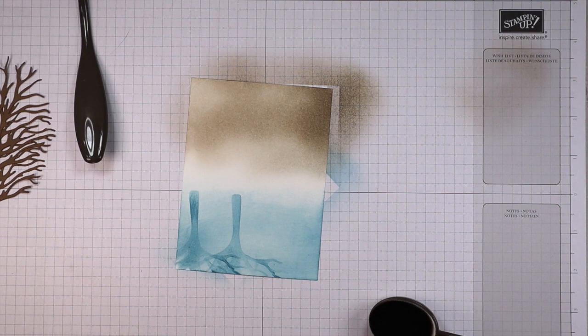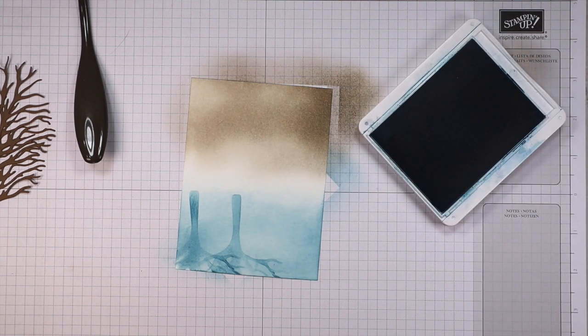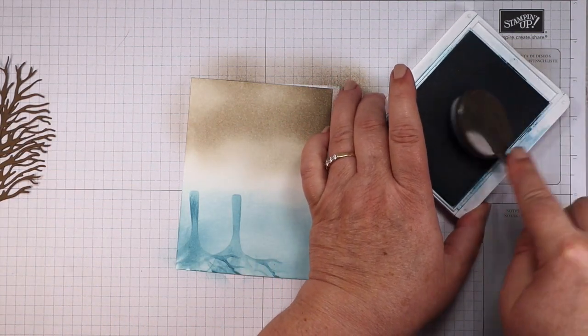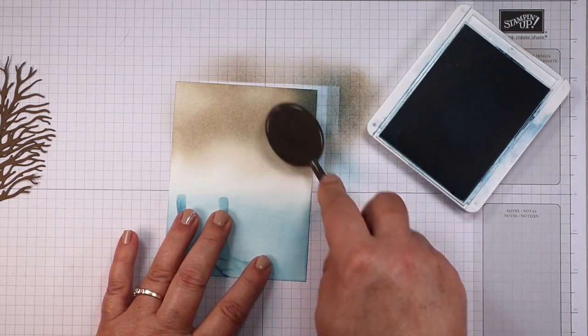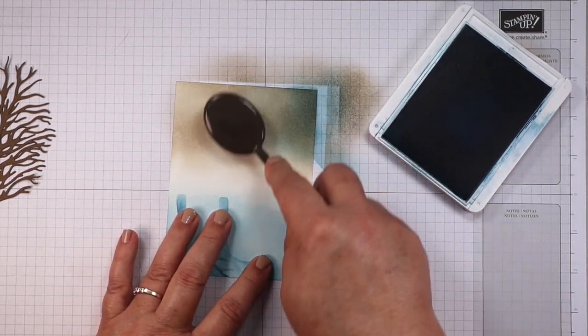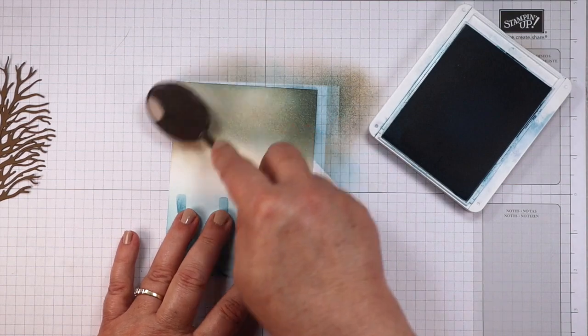There's that and I'm going to go back to my balmy blue. I want some balmy blue up in the sky area. This is a very wintry sky. Layering colors gives you so many more options.